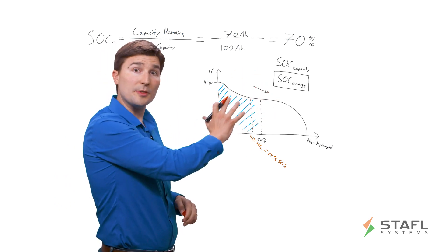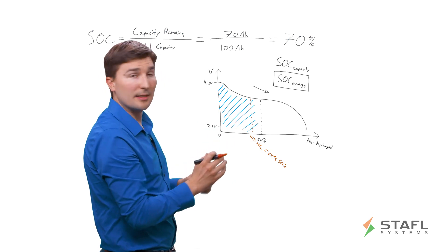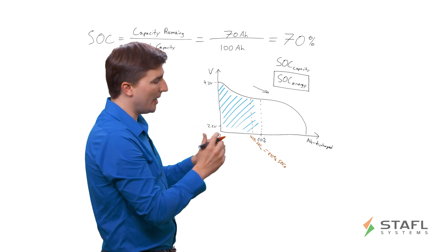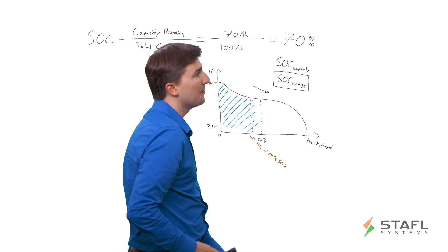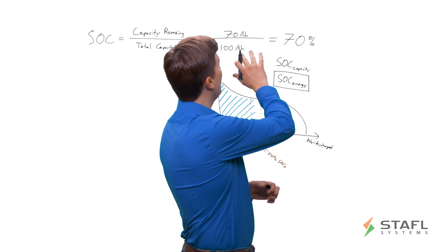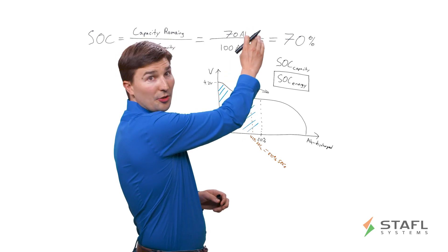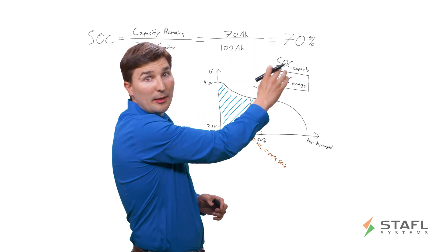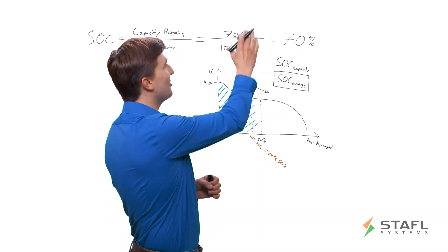It typically has a number of more sophisticated elements. But for the purposes of today, I do want to discuss Coulomb counting, which is the primary way that state of charge is calculated. As I mentioned earlier, in this example, we have 100 amp hours and we discharge 30 amp hours to have 70 amp hours remaining, which means we're at a state of charge of 70%. But how did we determine that we discharge 30 amp hours?